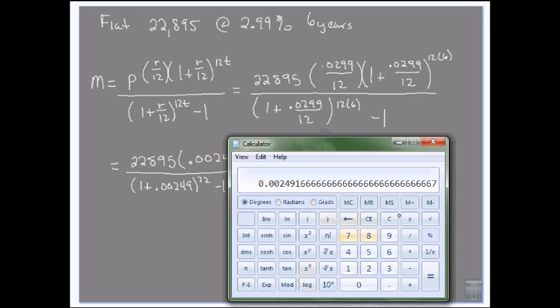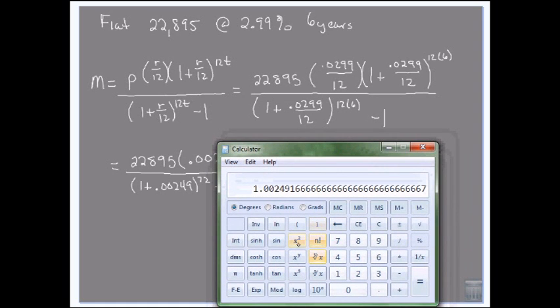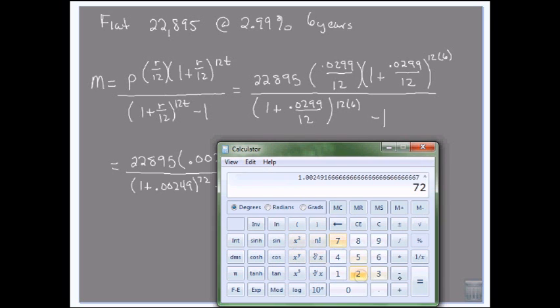Okay, so everywhere there was a rate divided by 12, I'm just putting that in. The next thing I'm going to do is, because it's already in the calculator and that way I'm not dealing with the rounding, I'm going to add 1 to it. And then I'm going to raise it to a power of 72. I'm going to get 1.1962.